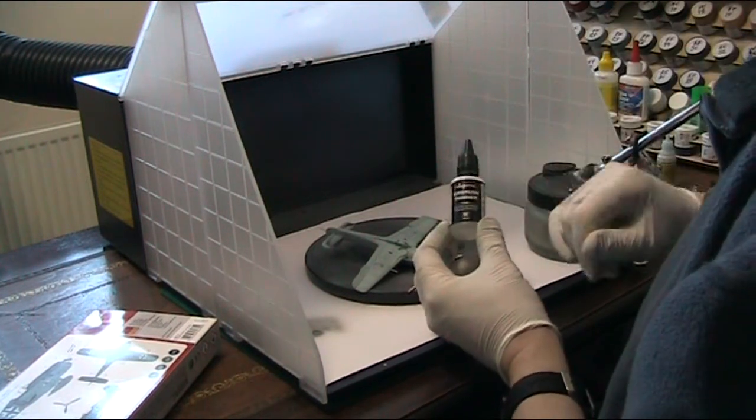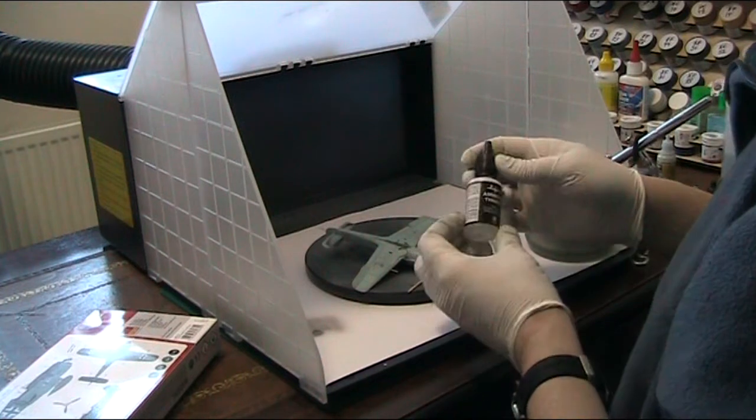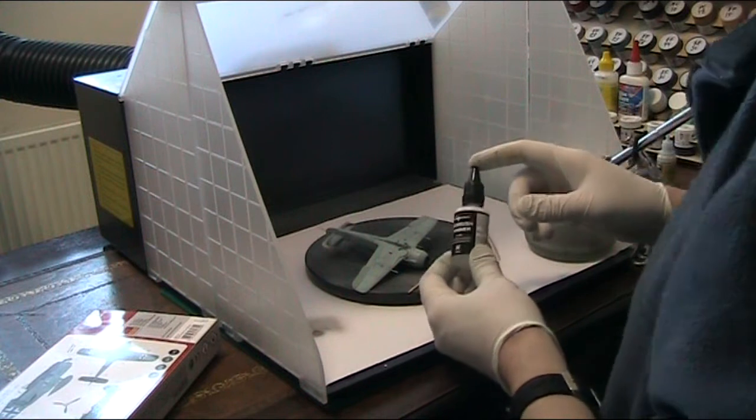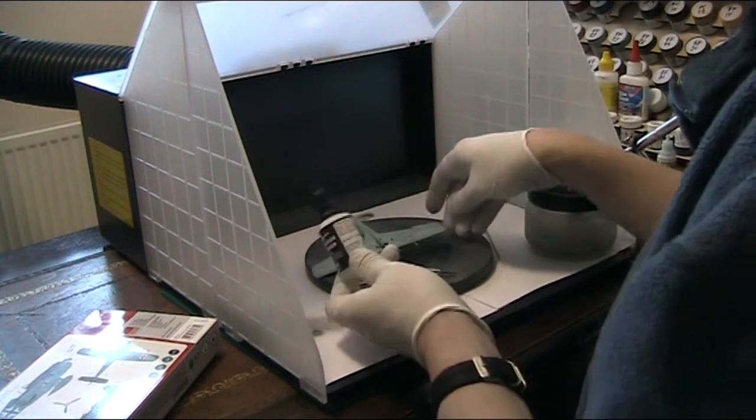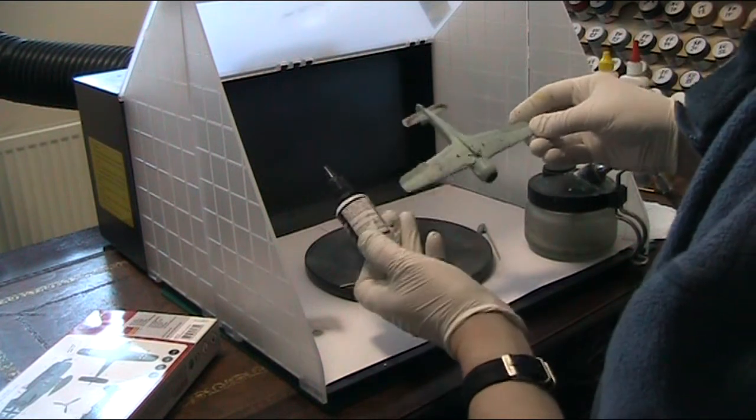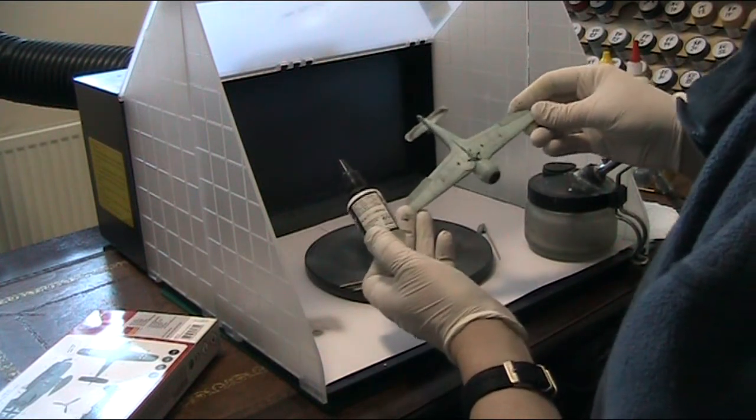And I'm now just going to add in a touch of the Vallejo airbrush thinner. The reason is I just want to now go for just a thin go over. I don't want to go on too thick because that panel lines starting to show through. And in various lights actually, you can sort of see that shadow effect coming through that.